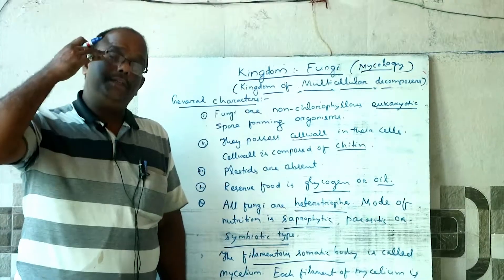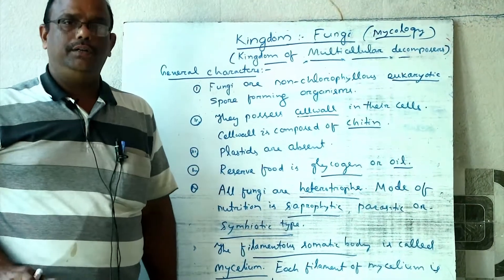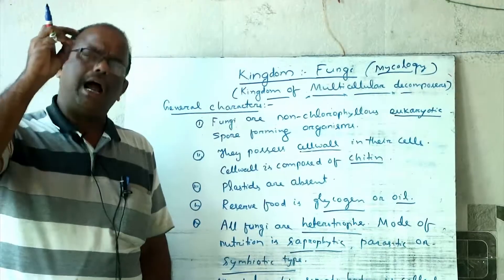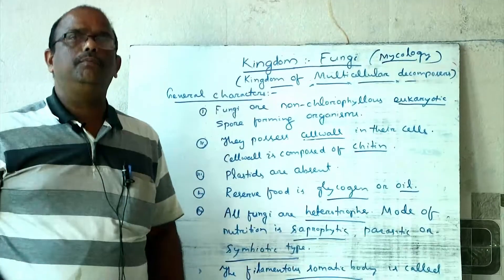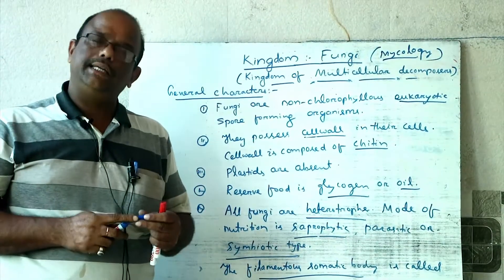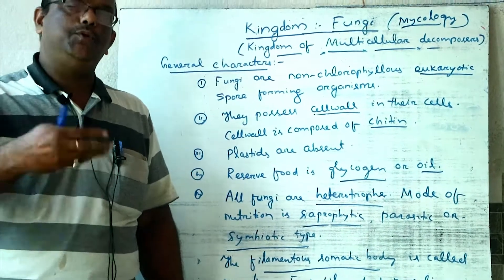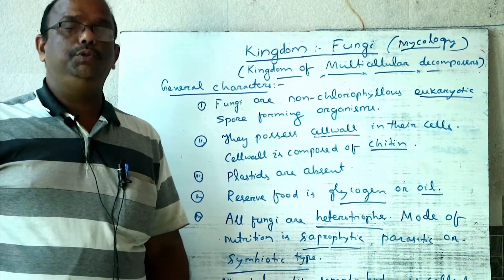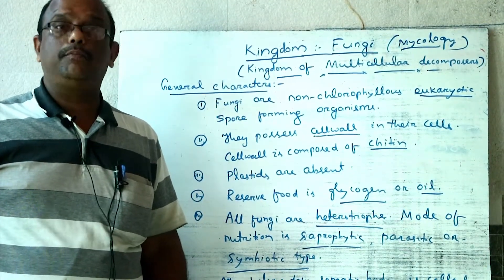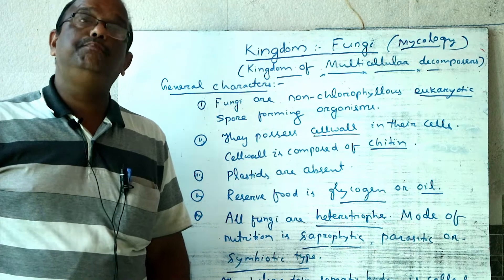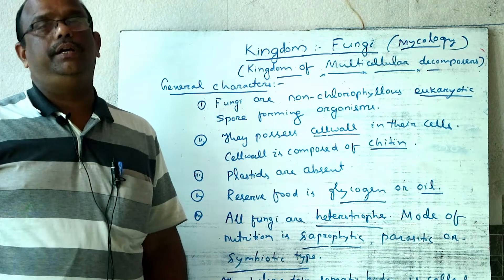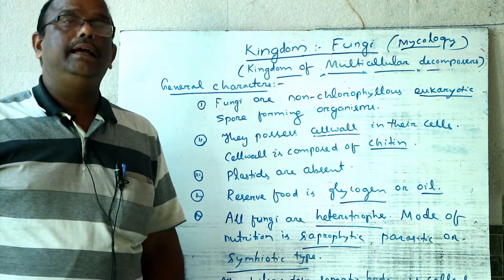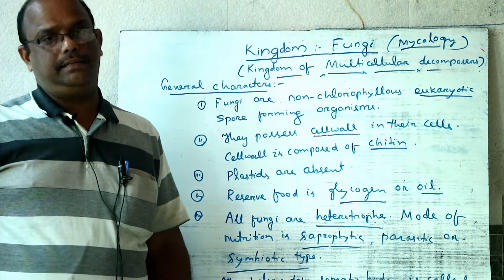The most advanced fungi do not perform sexual reproduction and only reproduce by asexual methods. These are called imperfect fungi and are placed in the class Deuteromycetes.